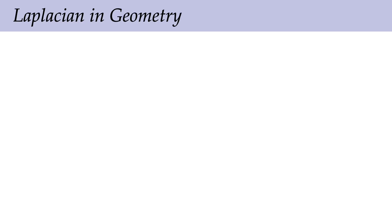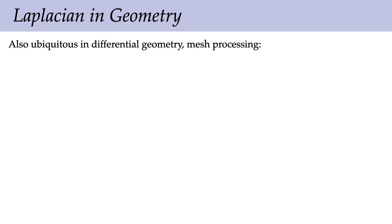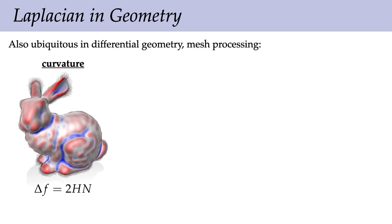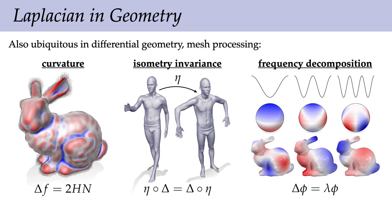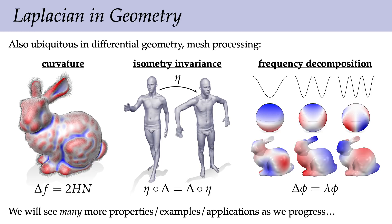The Laplacian also pops up all over geometry. In differential geometry and mesh processing, the Laplacian is one way of talking about the mean curvature of a surface. It's useful for studying and processing surfaces because it's isometry invariant—if we bend a surface in a way that doesn't change point-to-point distances along the surface, the Laplacian is preserved. We'll also see that the Laplacian gives us a natural sense of frequencies on the surface, allowing us to get a basis of frequency functions on any shape.